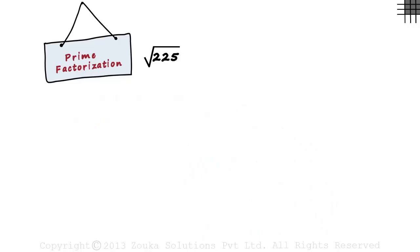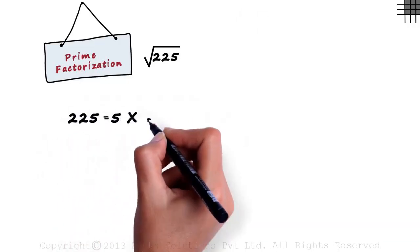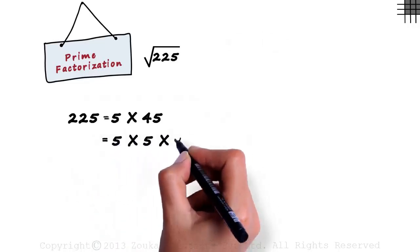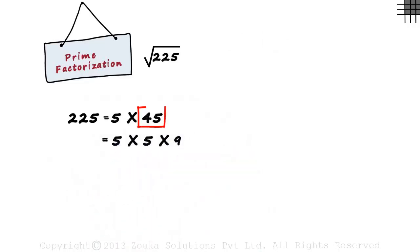So let us start reducing the number 225 into prime factors. Prime factors are the factors of this number which are prime. We can write 225 as 5 multiplied by 45. 5 is prime but 45 isn't. So let's reduce 45 further and write 225 as 5 times 5 times 9. We wrote 45 as 5 times 9.